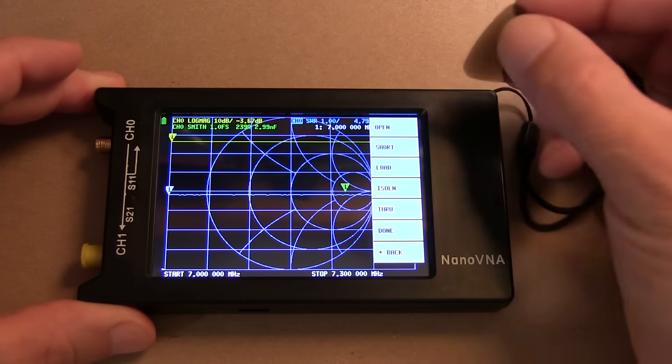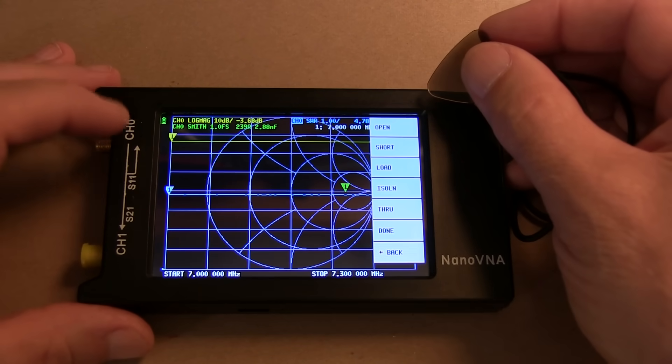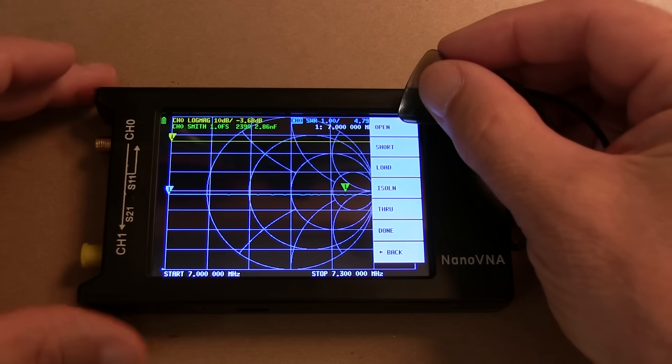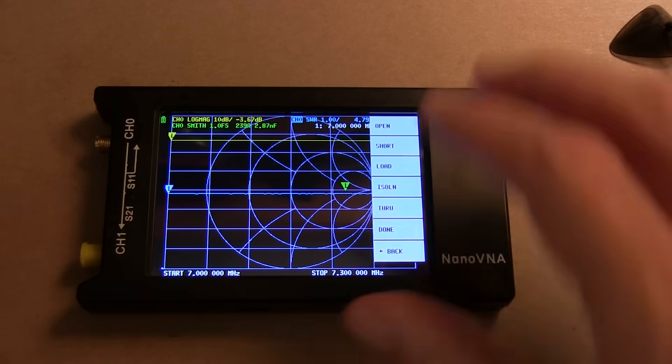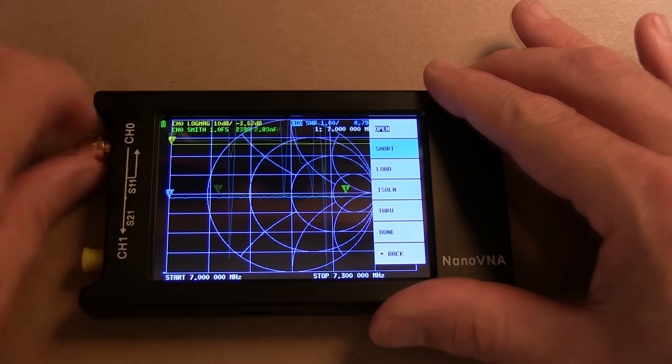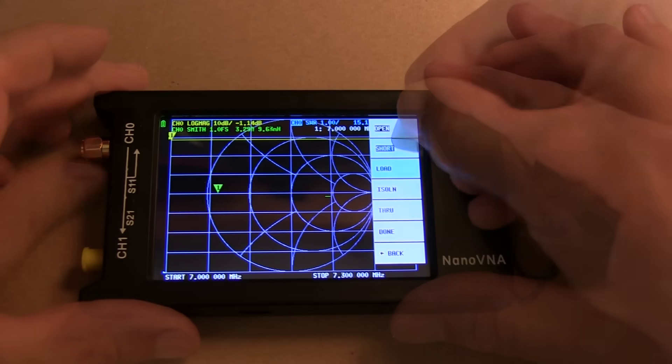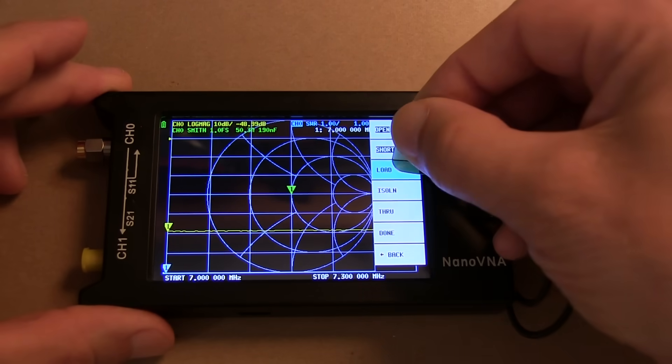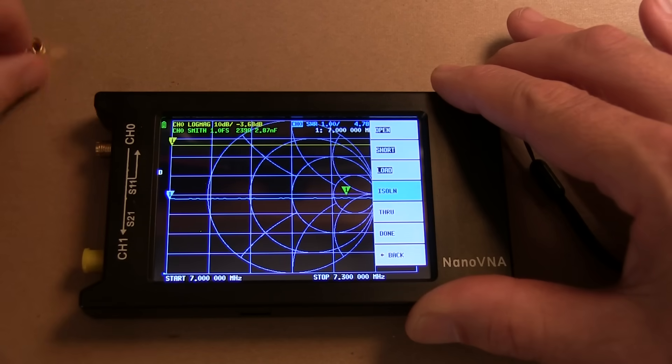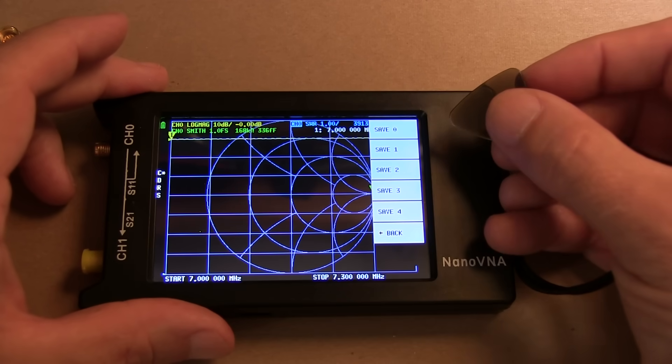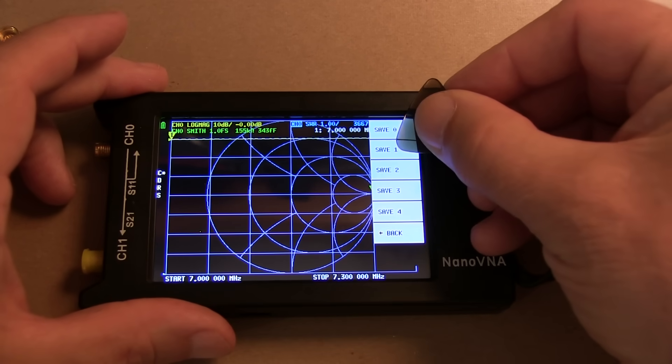And then we hit Calibrate. And since we're only doing a reflection measurement on channel 0, we only have to do an Open, Short, and Load. So we start off by putting the Open on the port and touching Open. And next we put a Short on the port and touch Short. And then we replace the Short with a 50 ohm Load on the port and touch Load. Once we've done all three standards, we can hit Done and then choose to save it to a memory location. I'm going to choose just to save it to location 1.